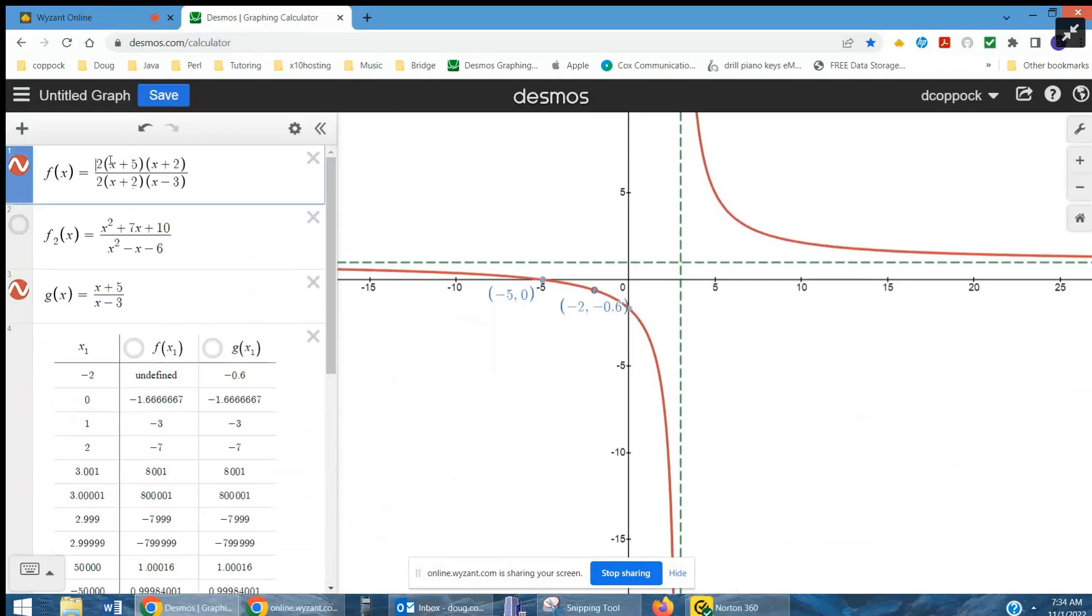But some of the values on the function change. If I put a negative here, same difference. Okay, there you go. Hope that helped. If you have any questions, post a comment.